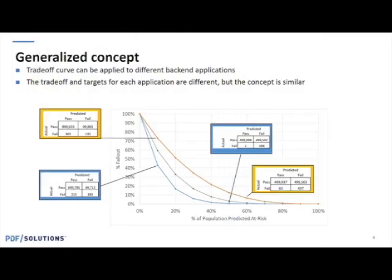So let's dig into this a bit. What I'm showing here is a very generalized concept of the tradeoff curve that can be applied to different back-end applications. The specific use case may be different, but they can be kind of thought of in the same manner. So what I'm showing here is on the y-axis, you would have a percent fallout, and on the x-axis, you would have percent of population predicted to be at risk.